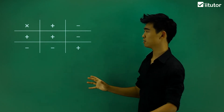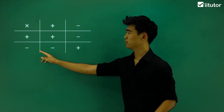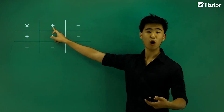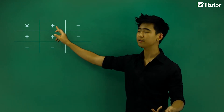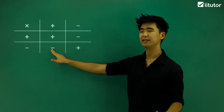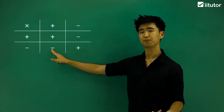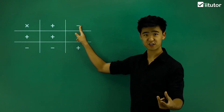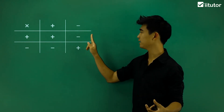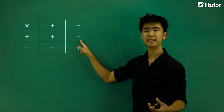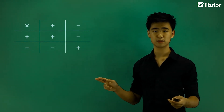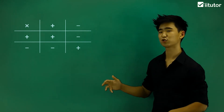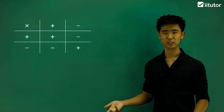Obviously, the converse of that: when you multiply two signs that are different or opposite in sign, it'll give me a negative result. So positive times negative — they're different in sign — will give me a negative number. Knowing this, let's try and answer a few questions.